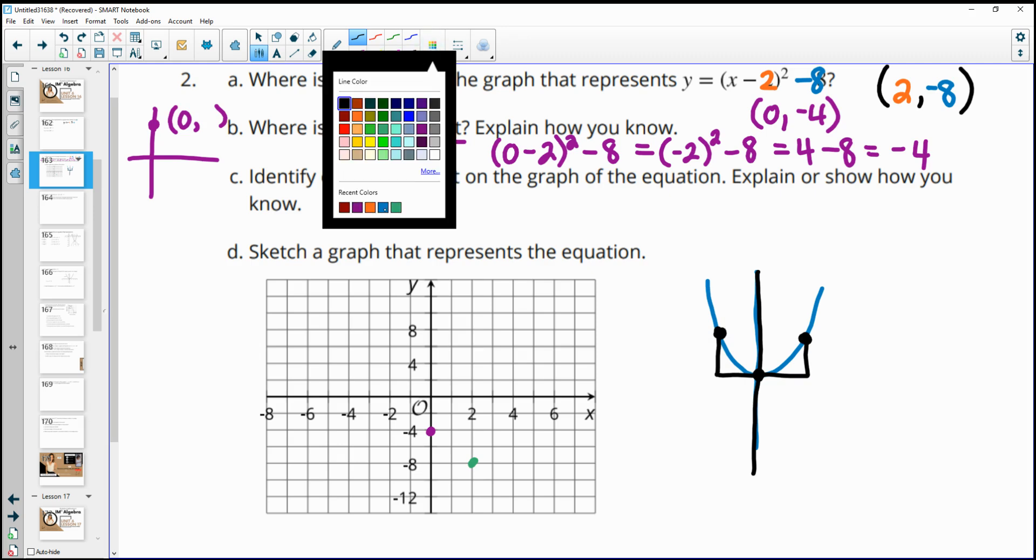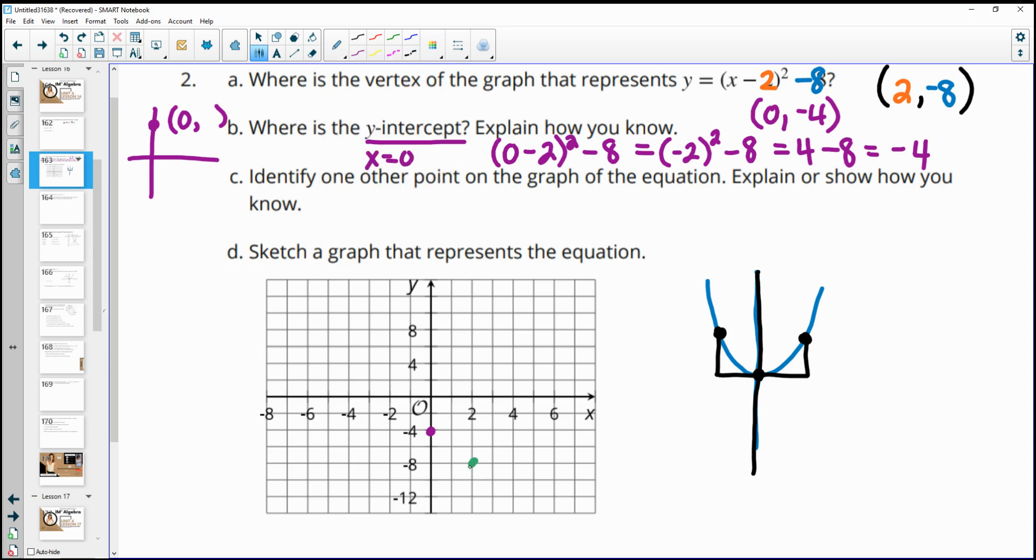So when we think about this down here, OK, here's our vertex. If we go over from 2 to 0, we're at negative 4. So if I go this way, I should also be at negative 4 so that these are aligned or symmetric. And so then we can just look at what that point would be. And that would be the (4, -4), using your graph.